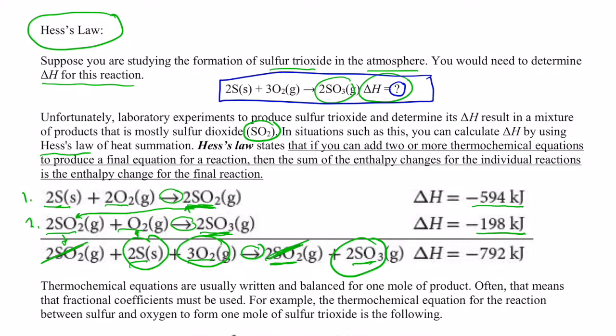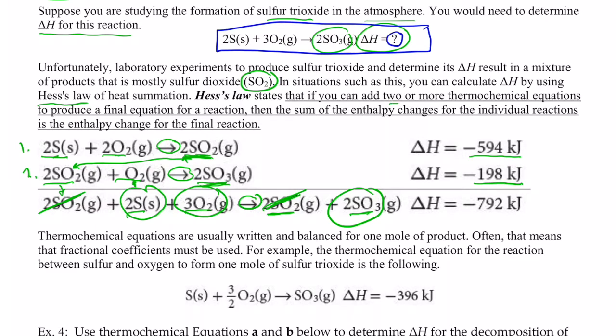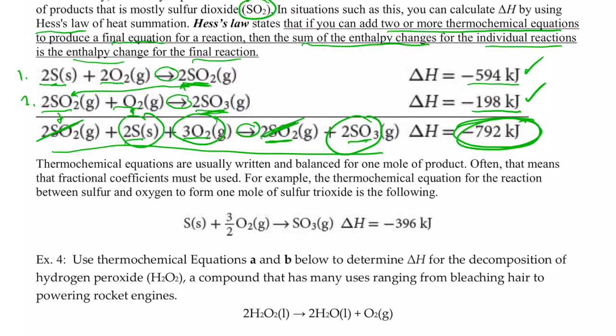Well, according to Hess's law, what we can do is add two or more thermochemical equations together to produce the final equation, the one we're looking for. Then the sum of the delta H's for those individual reactions will be the enthalpy change for the final reaction. So if I take this delta H and this delta H and add them together, since the equations add together to the reaction I'm after, their heats will add together for the reaction I'm after. And that's called Hess's law.